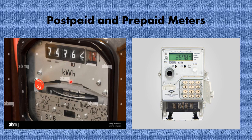With the new prepaid meter, all you have to do is buy an electricity token, load it using the keypad, and your electricity comes on automatically. Once it is exhausted, you buy another token, load it, and your electricity will come back on.